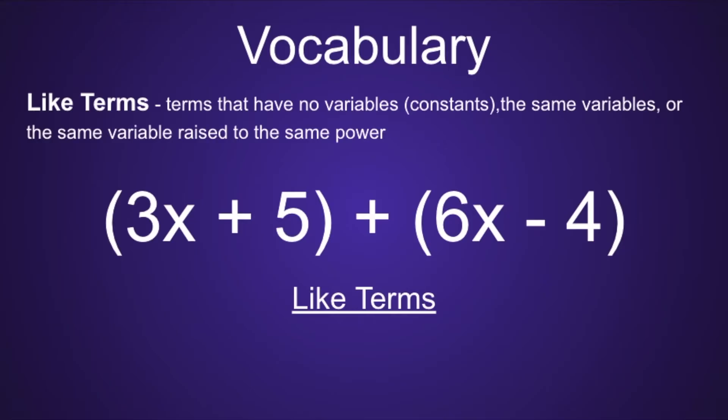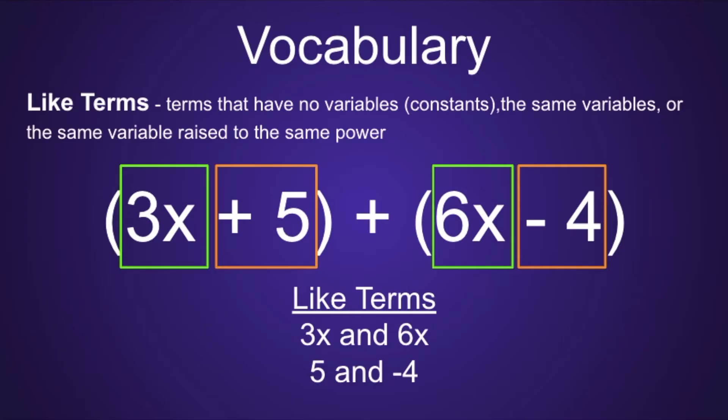The second vocabulary term is like terms. Like terms can have no variables—we call these constants. They can have the same variables, or they can have the same variable raised to the same power. In the expression below, the like terms would be 3x and 6x. Notice how both of those have the variable x, and then 5 and negative 4. Since neither of these terms have variables, these would be called constants.